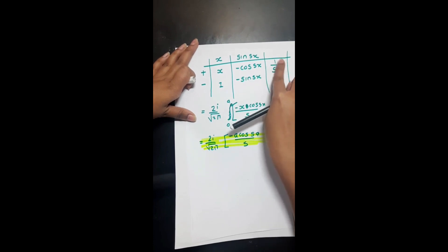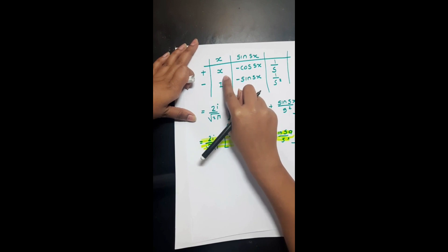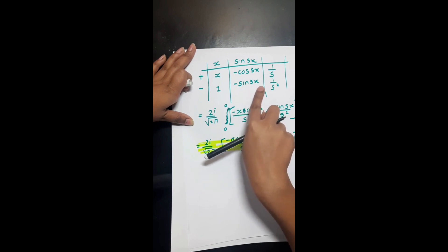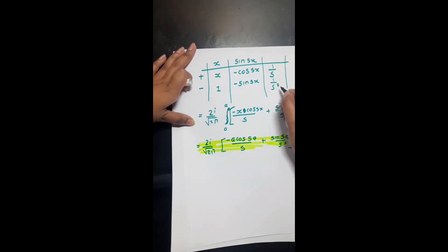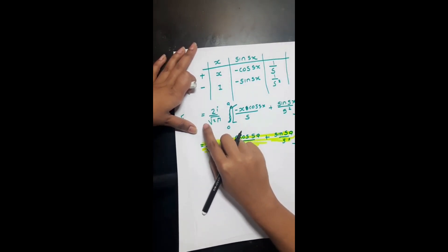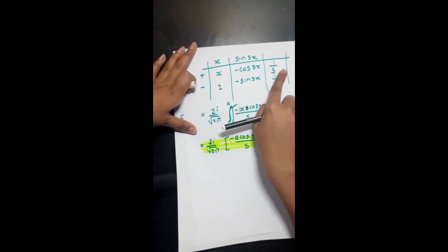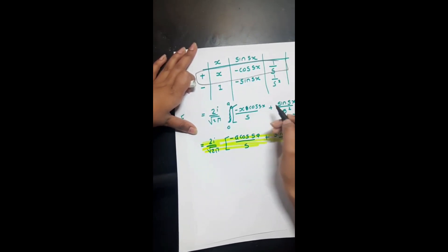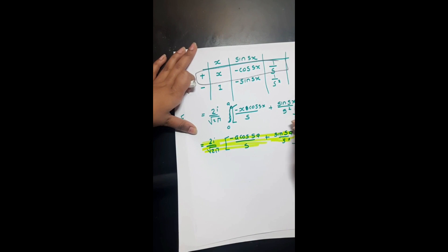In the second row, alternate the sign to plus. The differentiation of x is 1, and integrating −cos(sx)/s gives −sin(sx)/s². So the tabular result gives us: −x·cos(sx)/s plus sin(sx)/s², evaluated from 0 to a. Multiply the whole row accordingly.